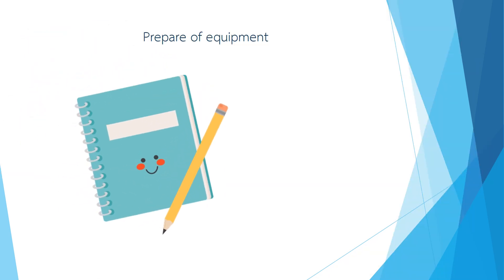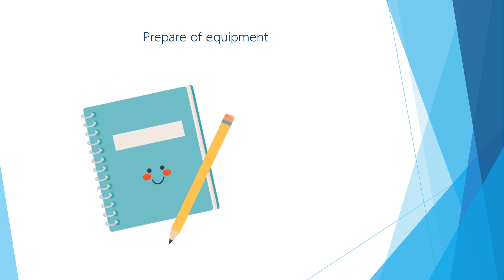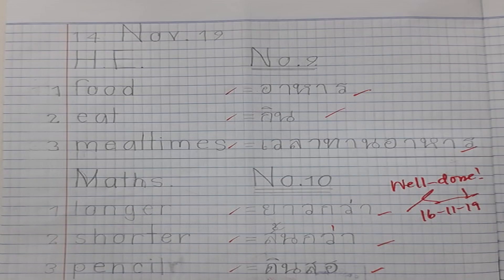Now we can start our lesson. What are the things you need for today's lesson? Get your notebook and pencils. Write some words on the left side space of your notebook, cut into half. The right side of your notebook is for your exercises. Let's start. For the left space of your notebook, first write the date.